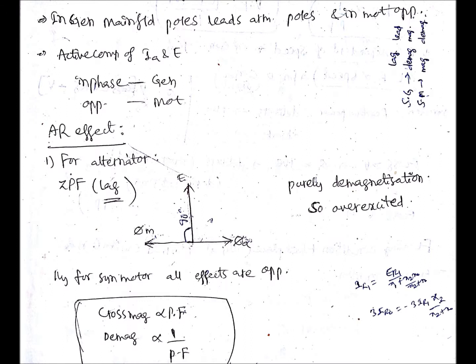If the load power factor is zero and it is lagging, the phasor diagram looks like this. If you observe, the main field flux phi_m is opposite to the armature flux phi_a. For this zero power factor lagging case, phi_a is 180 degrees displaced with phi_m, meaning it is completely opposing phi_m. So it is purely demagnetization.